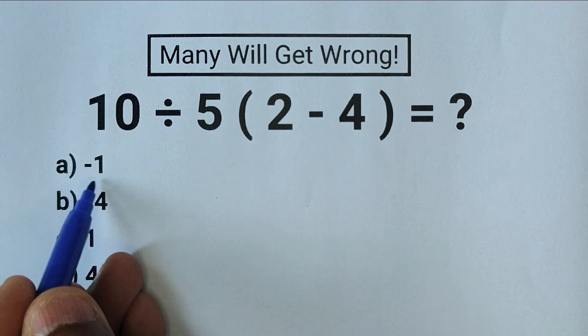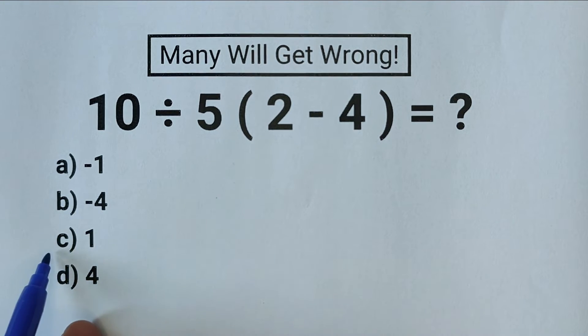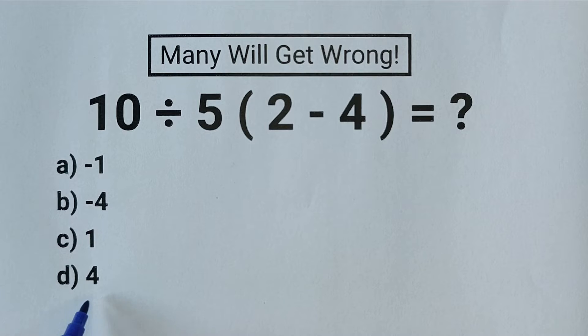There are four options. Option A minus 1, B minus 4, C 1, and D 4.